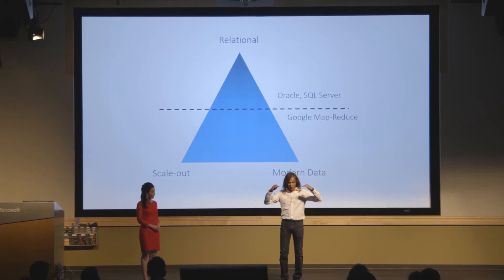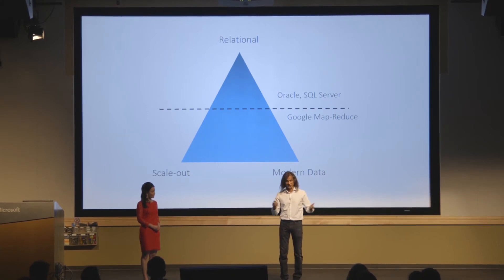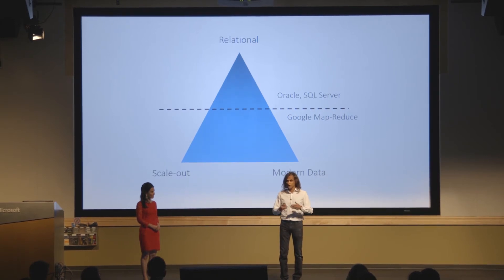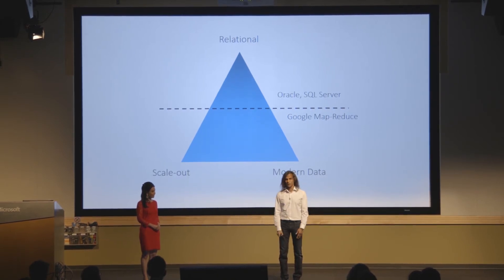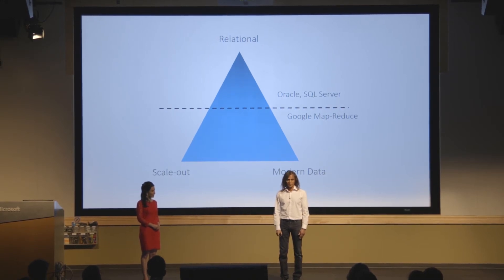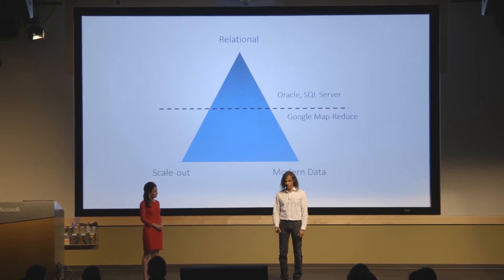If you look at the lower half of the triangle, this is where you can scale out, unlike relational technologies that do not scale out. And you can work with arbitrary data, which means you can go beyond the tabular structure of rows and columns. Scalar is unique in its ability to bring the three corners together and provide a unique offering, which is called the Scalar Data Platform.